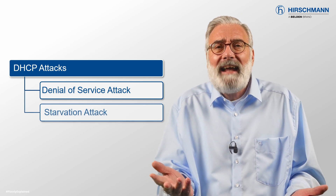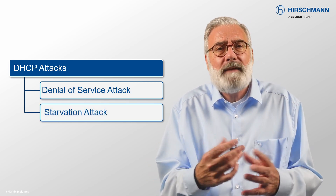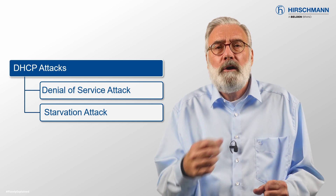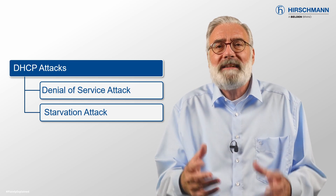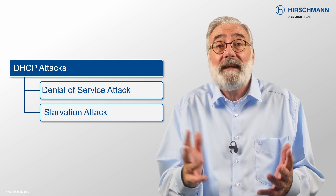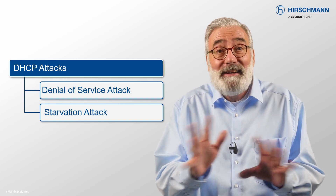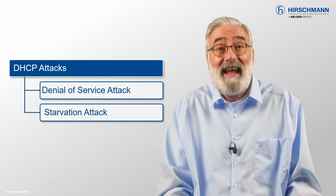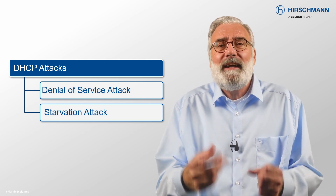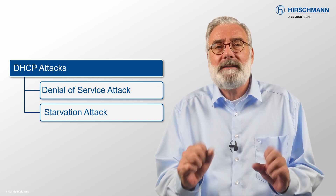An attacker can run some widely available malicious software which will request all available IP addresses from your DHCP server. There will be no addresses left for genuine devices. This is known as a starvation attack.